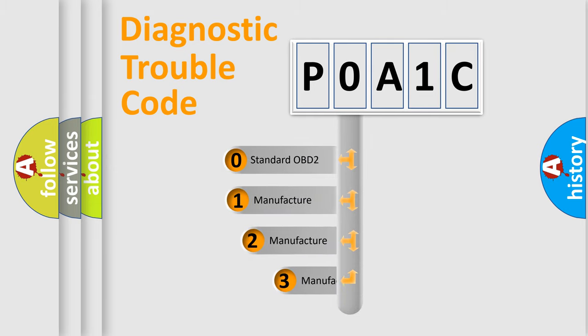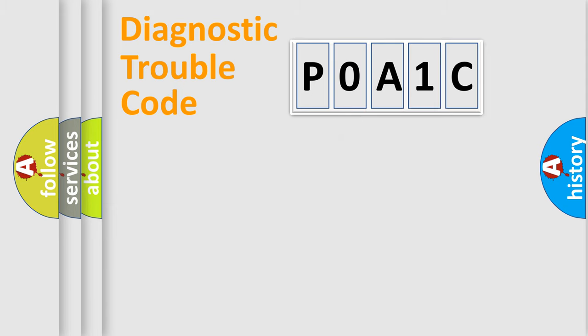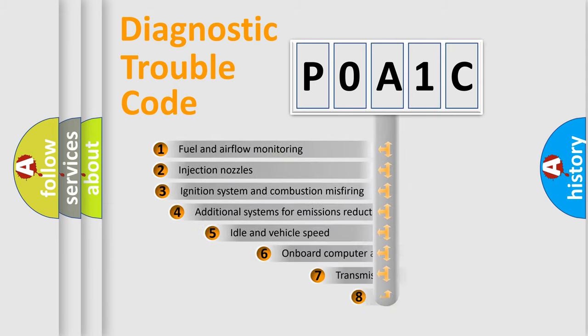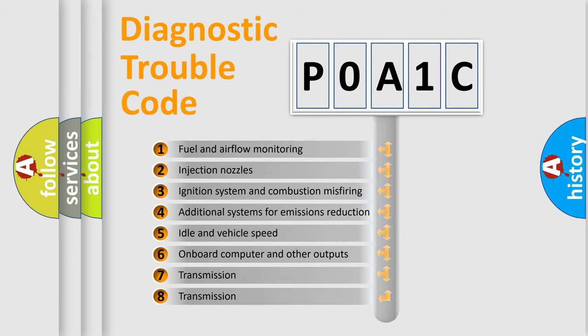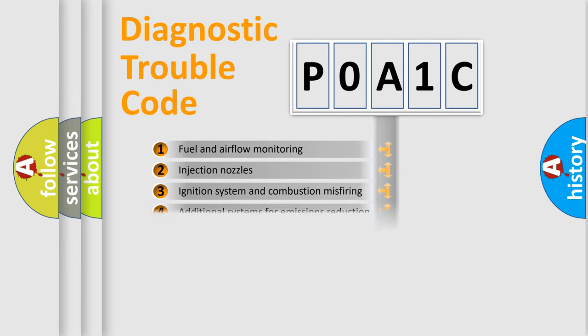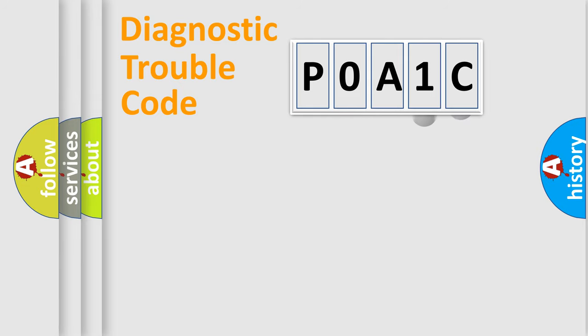If the second character is expressed as zero, it is a standardized error. In the case of numbers 1, 2, 3, it is a car specific error. The third character specifies a subset of errors. The distribution shown is valid only for the standardized DTC code.